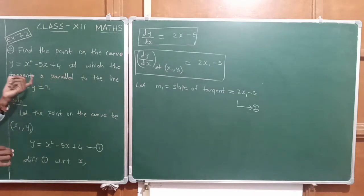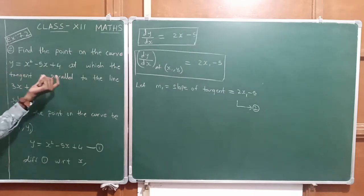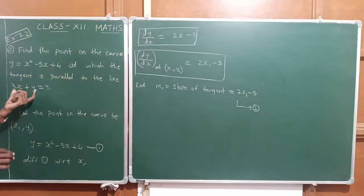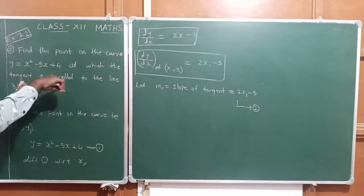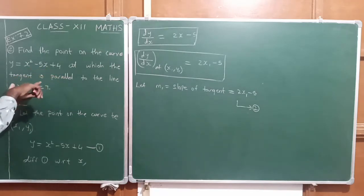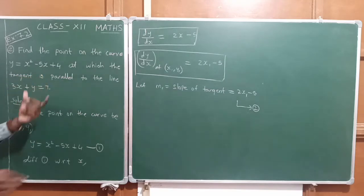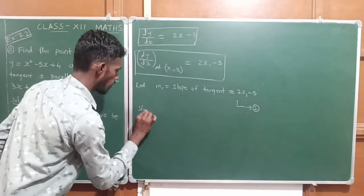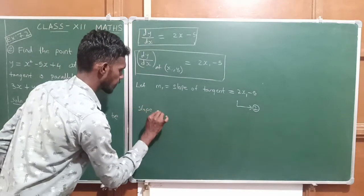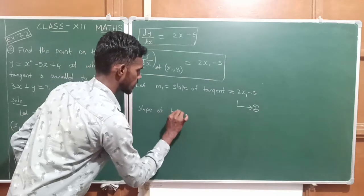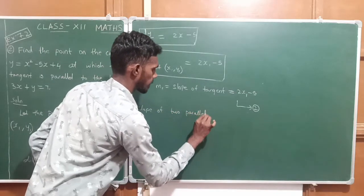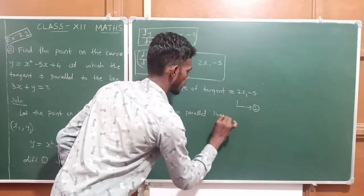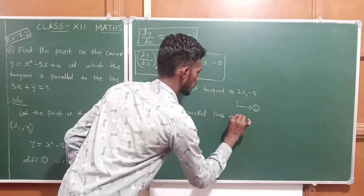The additional information given is that the tangent line has a parallel line. The equation of that parallel line is 3x plus y is equal to 7. When two lines are parallel, their slopes are the same. So the slope of two parallel lines are equal.